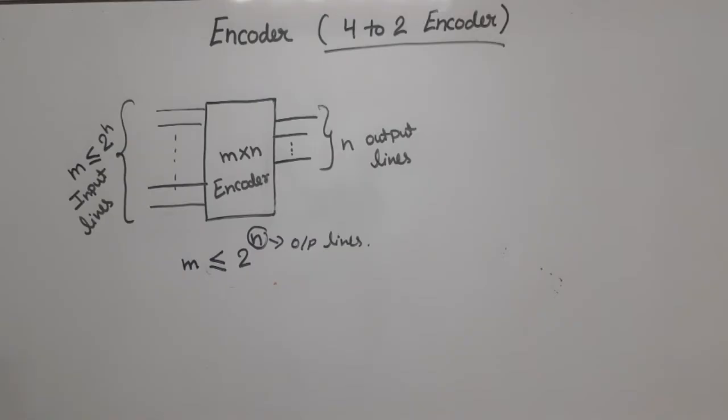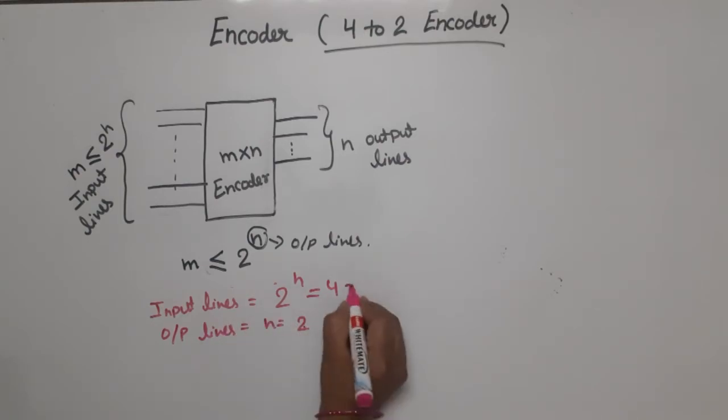The number of input lines is 2^n = 4, and output lines n = 2. If we put this value here, we get this relation.